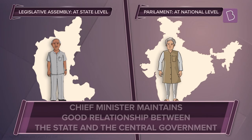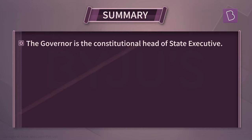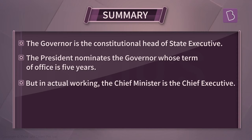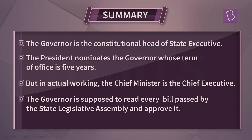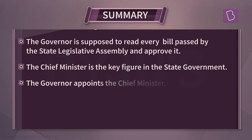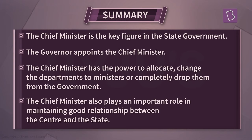The chief minister also plays an important role in maintaining good relationships between the centre and the state. In summary, the governor is the constitutional head of the state executive, nominated by the president for a five-year term, while the chief minister is the chief executive in actual practice. The governor approves every bill passed by the state legislative assembly, appoints the chief minister, and the chief minister in turn has the power to allocate or change ministerial departments.